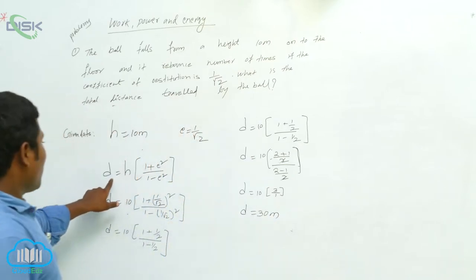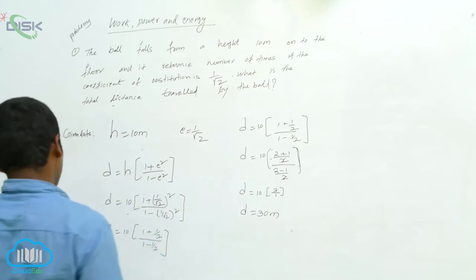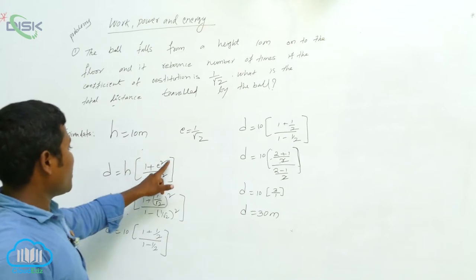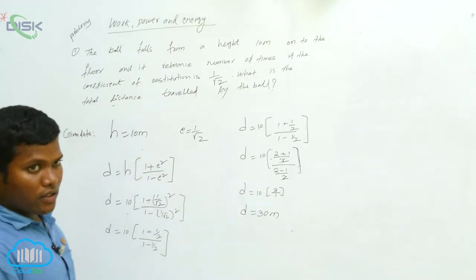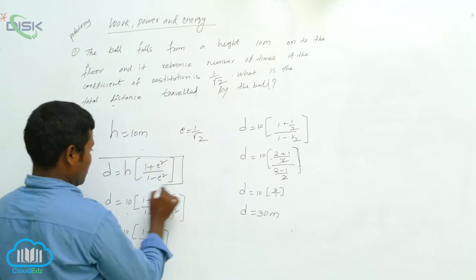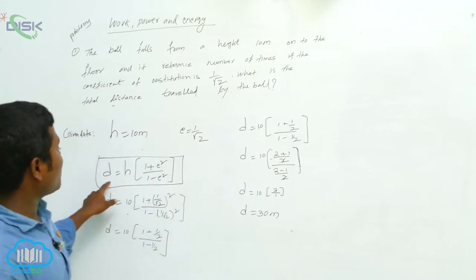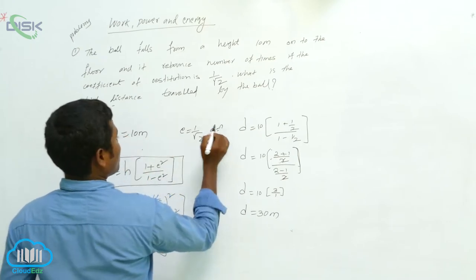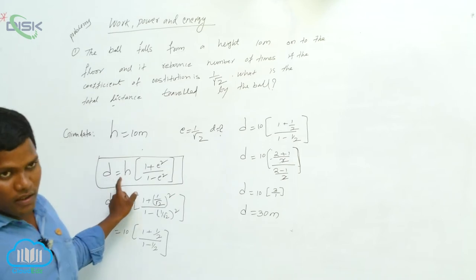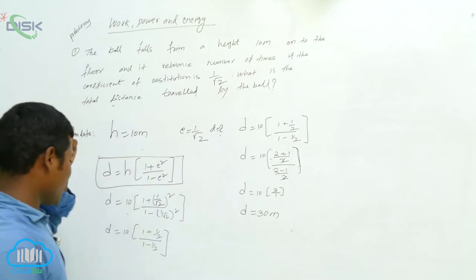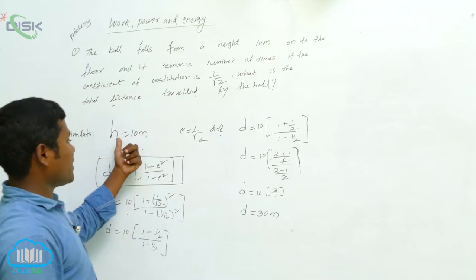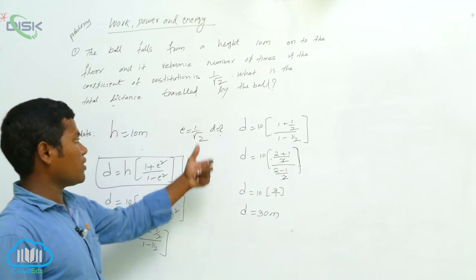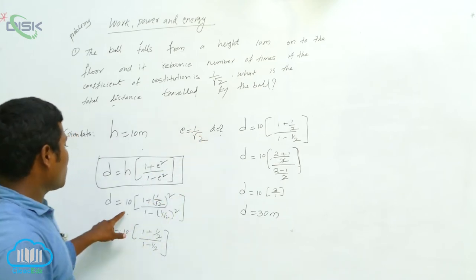The formula for finding total distance is D = h into (1 + e²) by (1 - e²). Here, D is what we are asked to find. We consider this formula: D = h times (1 + e²) by (1 - e²), where h = 10 meters and e = 1 by root 2.